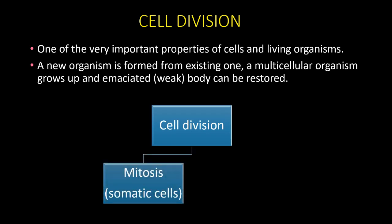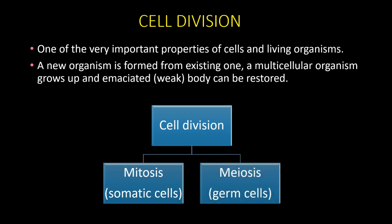Cell division is generally divided into two types. One is mitosis — the normal cell division that takes place in somatic cells, that is the body cells. The other is meiosis, which happens only in sex cells or germ cells. Both reproduction and growth happen with the help of these two types of cell division.